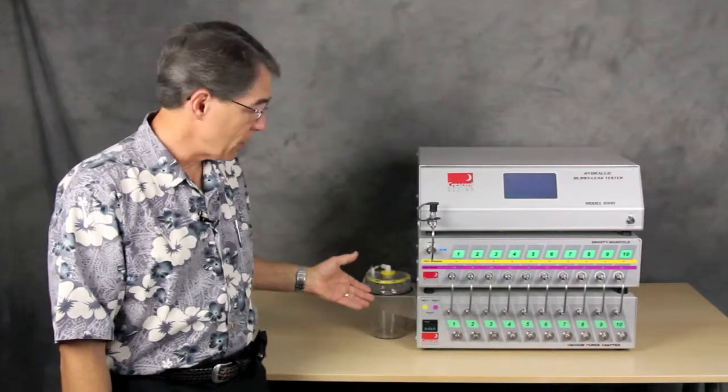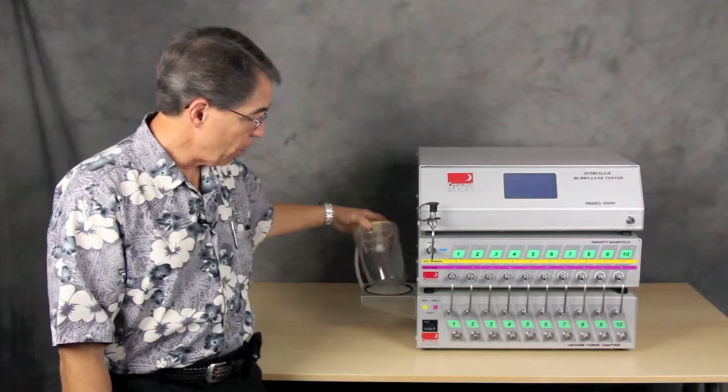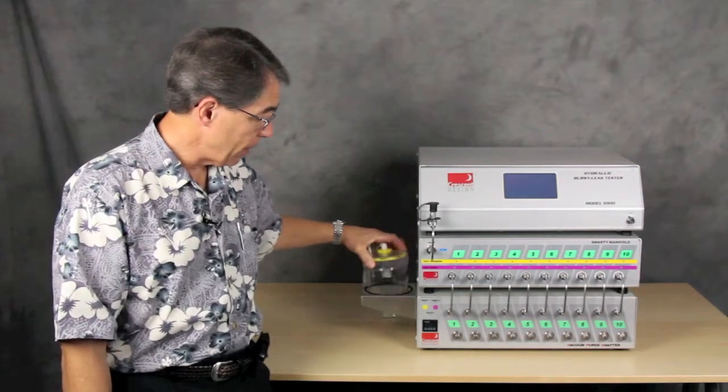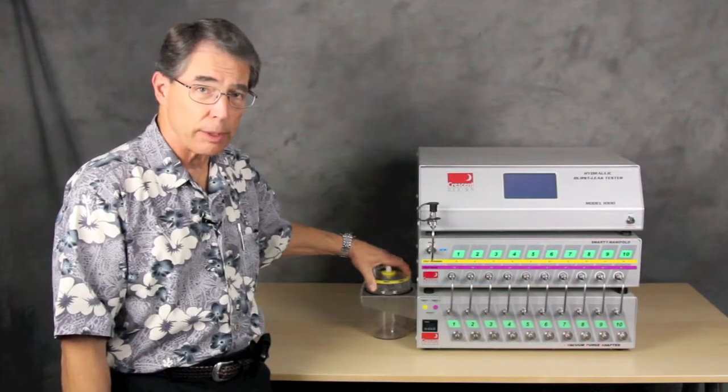So to start, we'll start on the left-hand side here. You'll see we have the vacuum reservoir, which we use to store the vacuum and any water that may be extracted from the product.